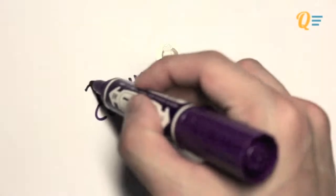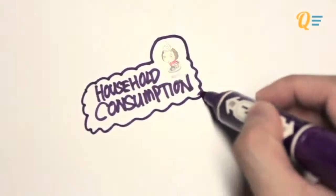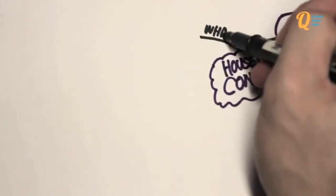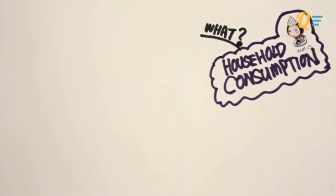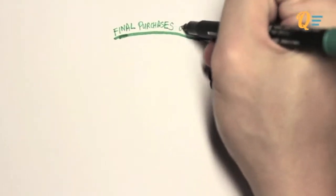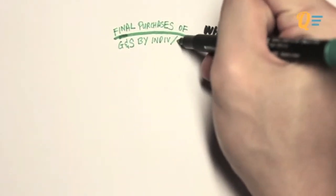So in this video, you're going to understand the definition of household consumption, and you are also going to learn mathematically how to calculate the total amount of consumption an economy has. What is consumption? In the most straightforward manner, consumption is defined as the final purchase of goods and services by individuals or households.